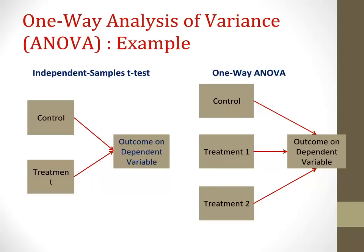To differentiate between when to use an independent samples t-test versus a one-way ANOVA: when there are two groups, an independent samples t-test is most likely the best choice. However, when there are more than two groups, the best choice is probably a one-way ANOVA. It's worth noting that sometimes even with two groups you may want to consider a one-way ANOVA. But generally, if you're comparing two groups on one dependent variable, use an independent samples t-test; if you're comparing three or more groups on one dependent variable, use a one-way ANOVA.